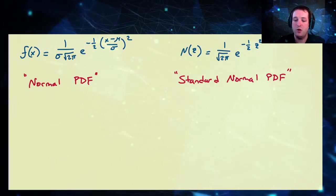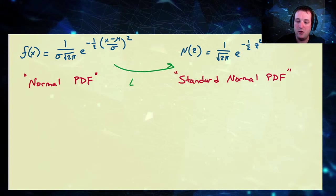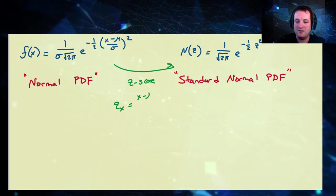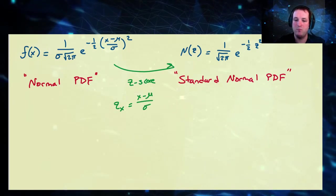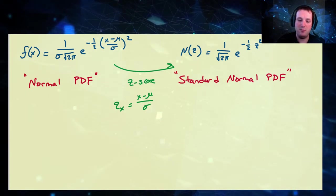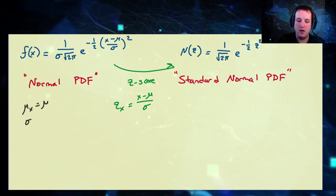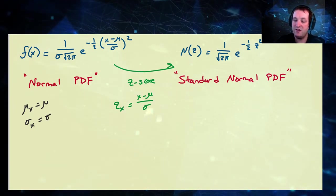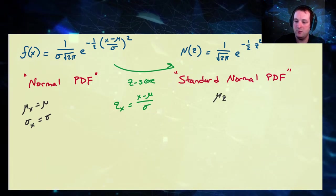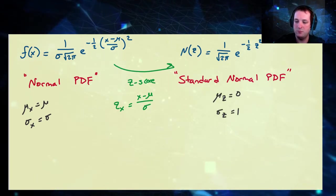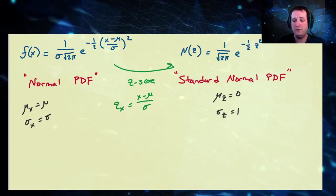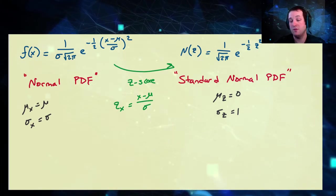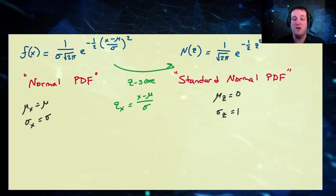We can easily convert between the two via what is called the z-score transform, where z_x equals x minus mu all over sigma. For the x random variable, the mean is mu and the standard deviation is sigma. For the standard normal distribution the mean is zero and the standard deviation is one. The standard normal distribution has quite a few easy examples which is why we typically work with it over the normal, although real world applications are solved in the normal as we saw last time.